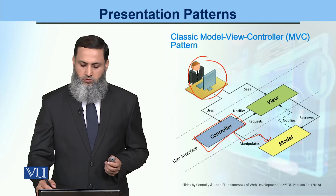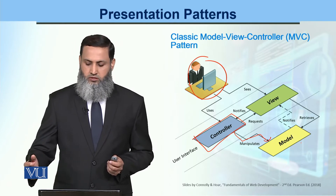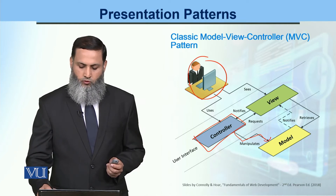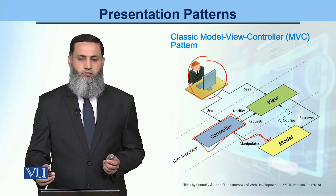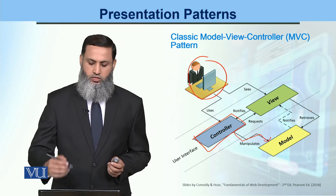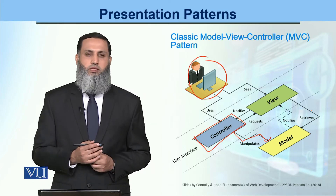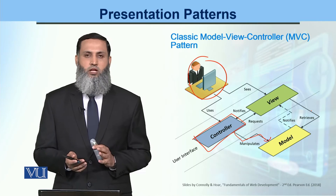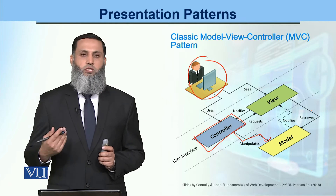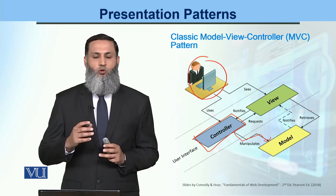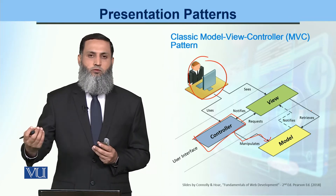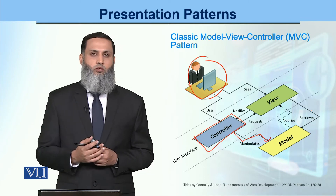There are variations in MVC. In one variation, the model provides data to the view, and then the view is rendered. There is no direct interaction between the model and the view. Whatever data the controller fetches from the model, it provides to the view, which is what the user sees on their screen.